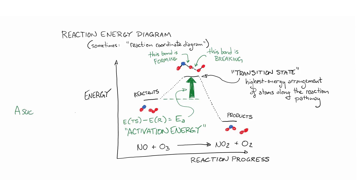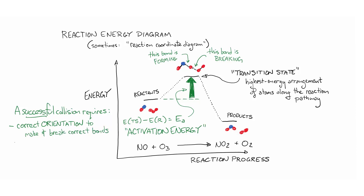The activation energy can be measured quantitatively. It depends on the reaction pathway, so it will have different values for different reactions, but it's always the same for a given reaction path. A collision between the correct molecules with the correct orientation still might not result in a successful reaction if the collision doesn't have enough energy to clear this barrier. Only collisions with both the correct orientation and more energy than the activation energy will make the products. The reaction rate measures how many successful reactions occur every second.